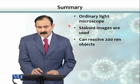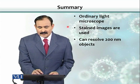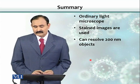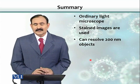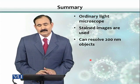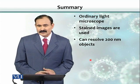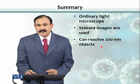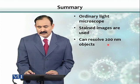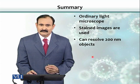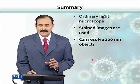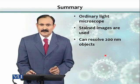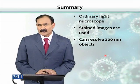In summary, an ordinary light microscope uses light as its source of illumination. To increase contrast, we mostly use stained specimens. The resolution of a light microscope is 200 nanometers — meaning organisms that are 200 nanometers apart can be visualized with a light microscope.